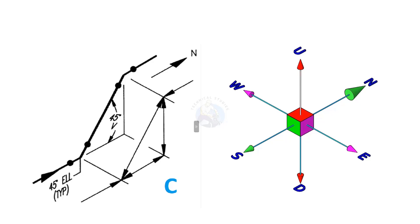In this drawing, the pipe goes to the north, then turns 45 degrees between the up direction and the north direction.